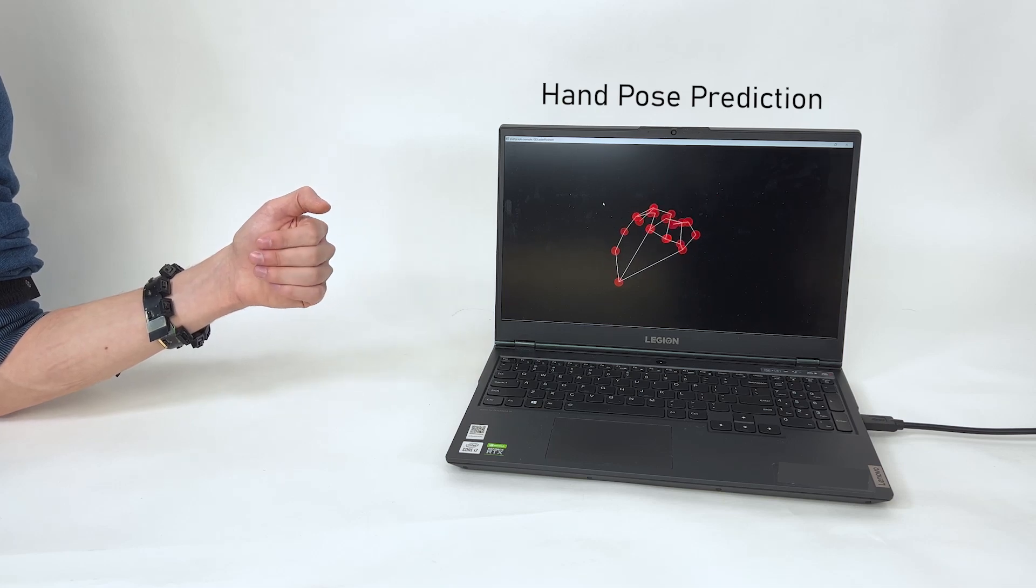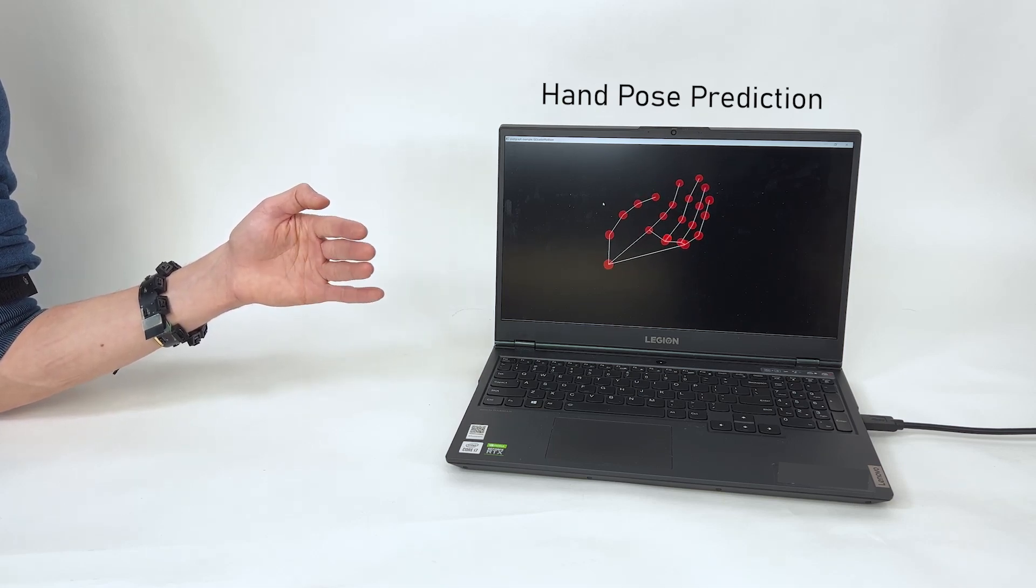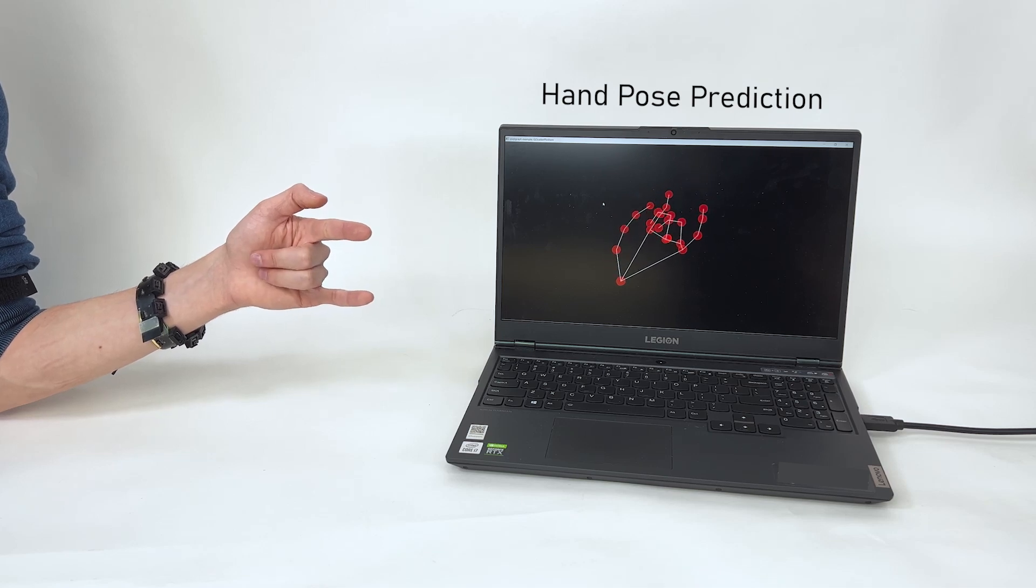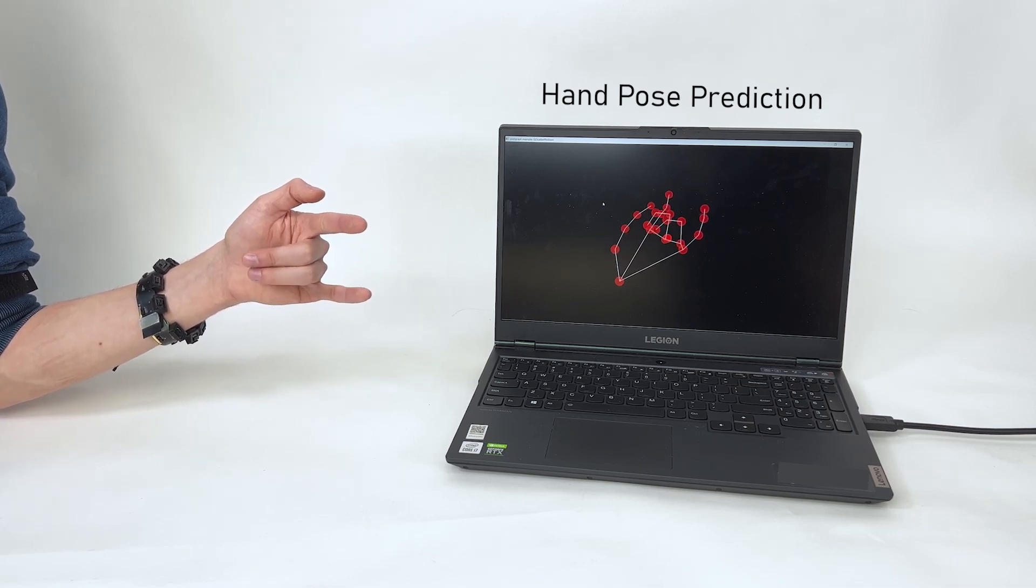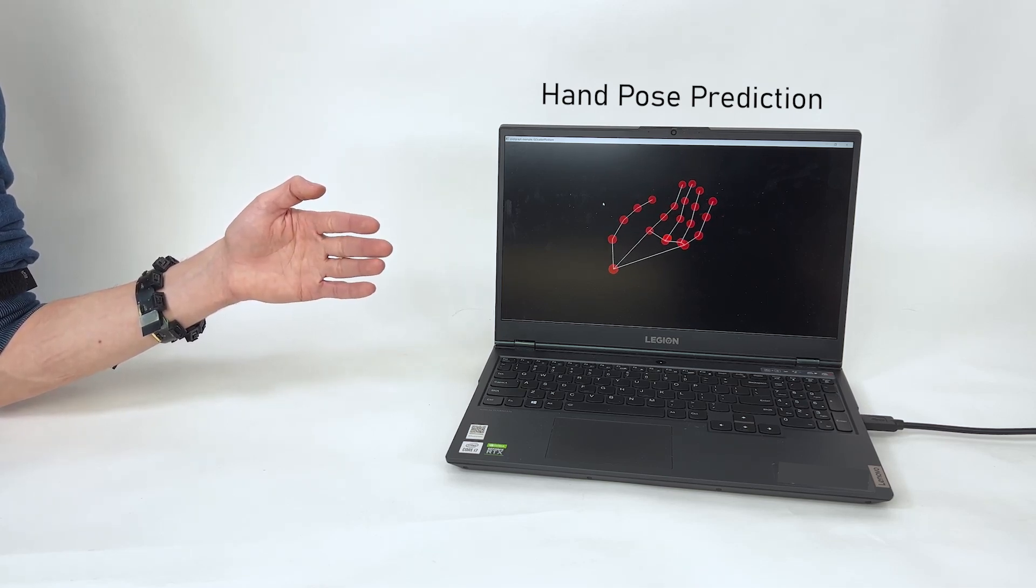Similarly, DiscoBand can use its point cloud data to estimate the wearer's hand pose in real-time. In our user study, we found a mean per joint positional error of 11.7 millimeters.